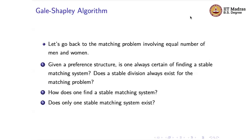Another question is: can we be certain there is only one stable matching system? We already know the answer to this, and the answer is no. We have already seen examples where for this pairing problem there are actually more than one stable matching system. So that is something to keep in mind.